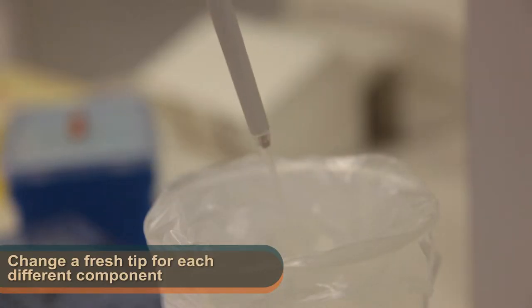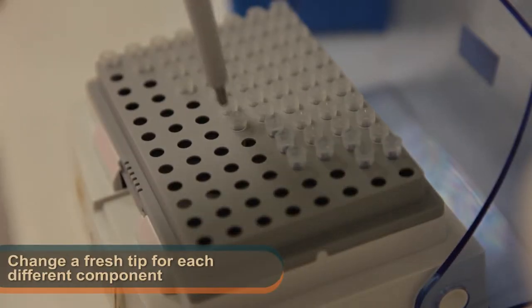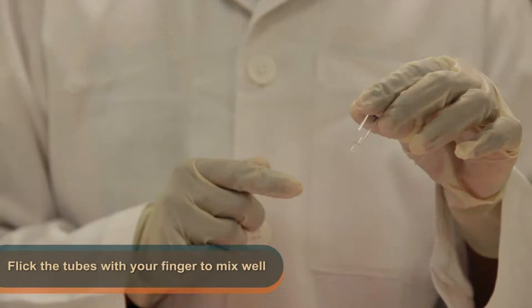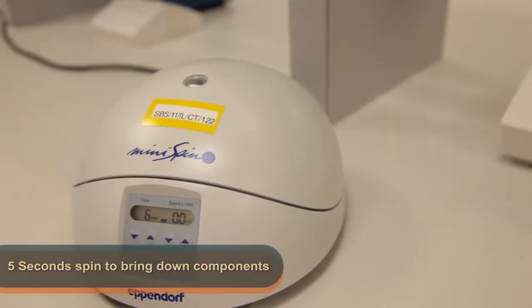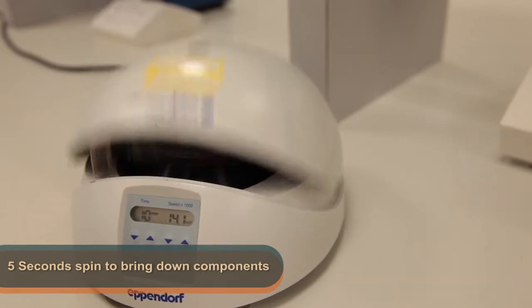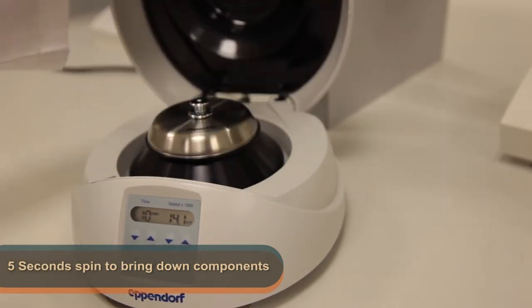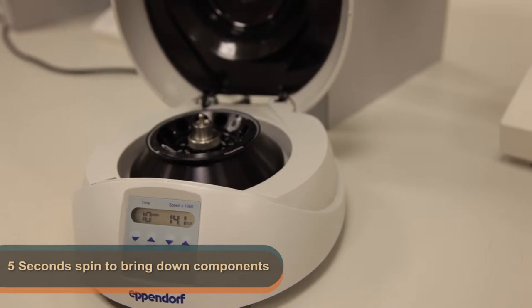When adding different components, do use a fresh tip to avoid any contamination. Flick the tubes with your fingers to mix the reagents and perform a five-second short spin to bring the components down to the bottom of the tube. Do try to prevent any formation of bubbles.